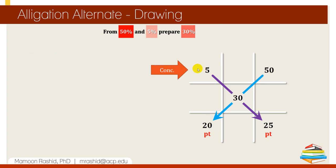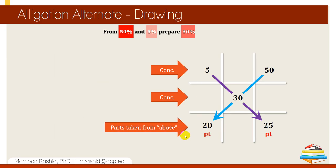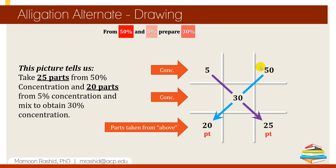The top two rows represent concentration — they can be concentration, density, specific gravity, or anything similar. But the bottom row does not represent concentration. Instead, it tells you how many parts to take from the stock listed above it: 25 parts from the 50% concentration and 20 parts from the 5% concentration. It's very important not to get confused — the 20 and 25 are parts, which is why I always advise students to write 'PT' or 'parts' with the numbers on the bottom row.